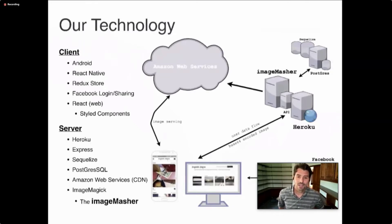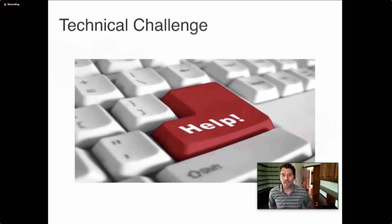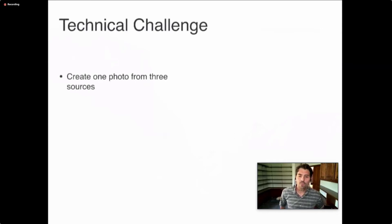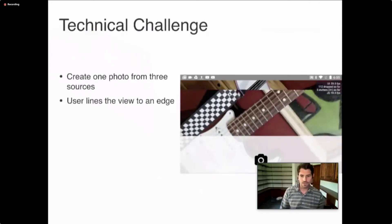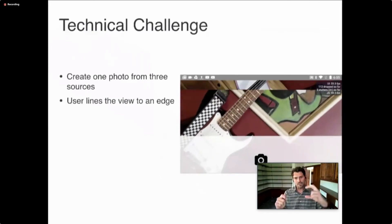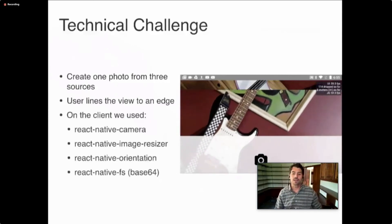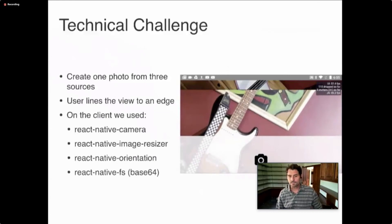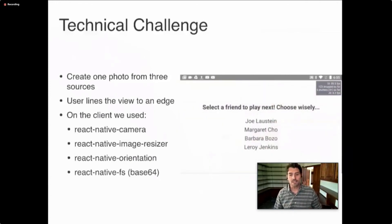ImageMagick serves as the backbone of our image masher — trademark pending. With all these technologies interacting, you can imagine the number of challenges we faced. One challenge: creating one photo from three sources without letting the user know how hard it was to do. This process starts on the client side, where the user lines a photo up to the edge of another photo. We used React Native camera image resizer orientation, which helped us pull off that feat. We encode that image and send it off to the image masher for mashing.